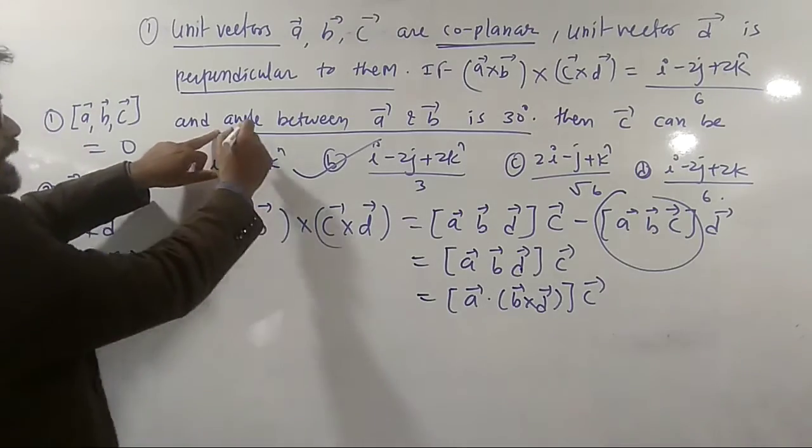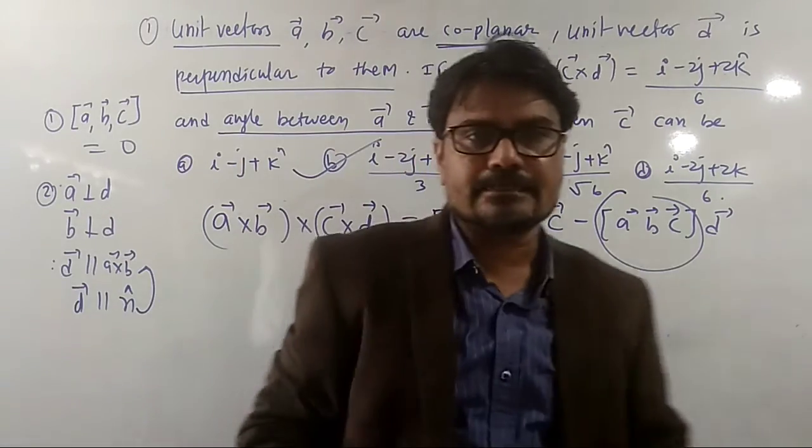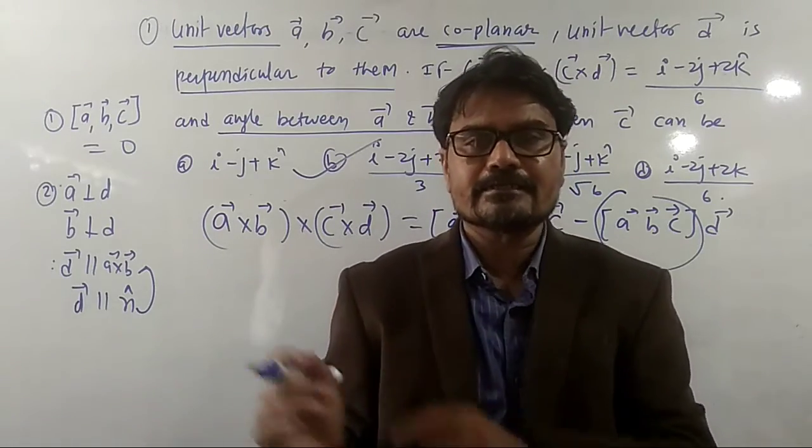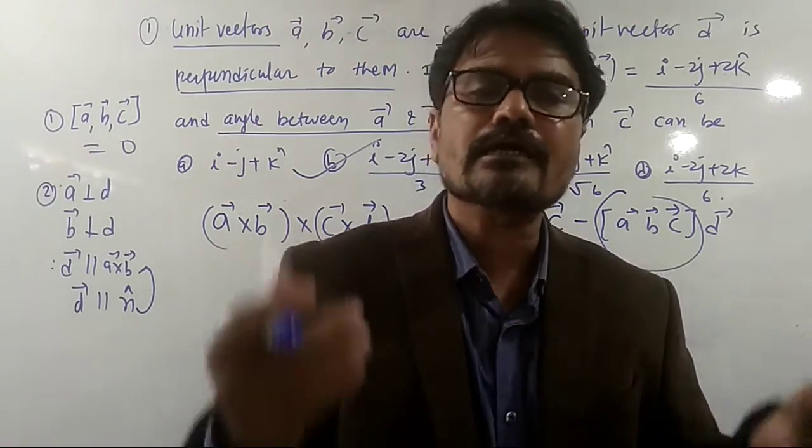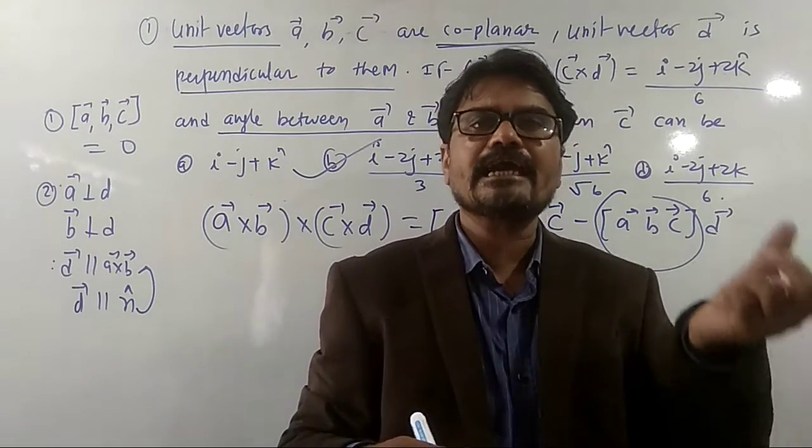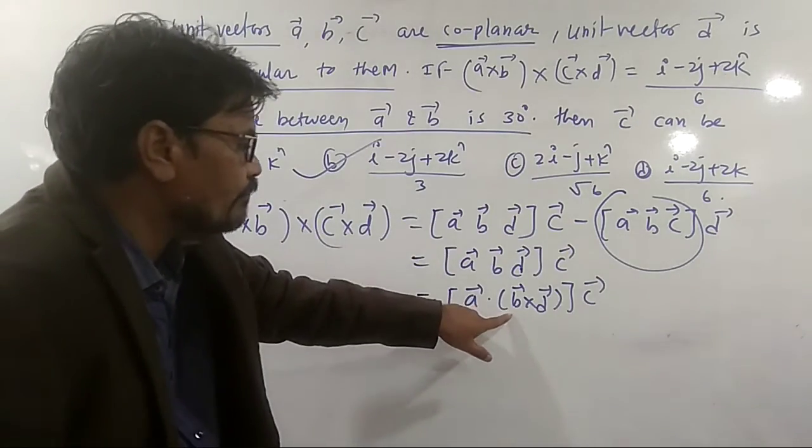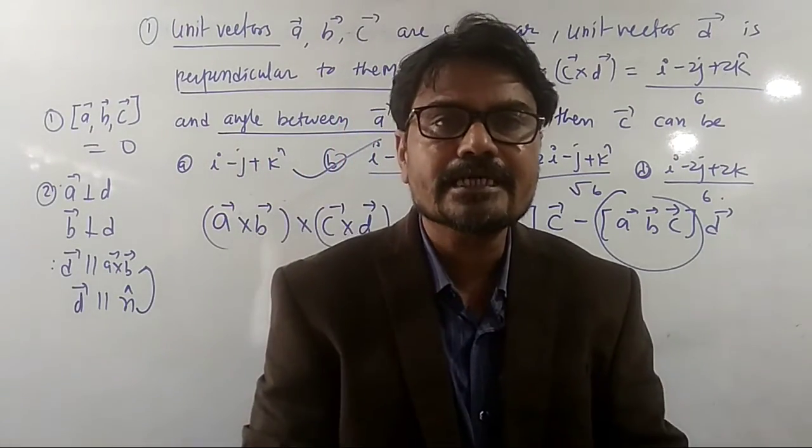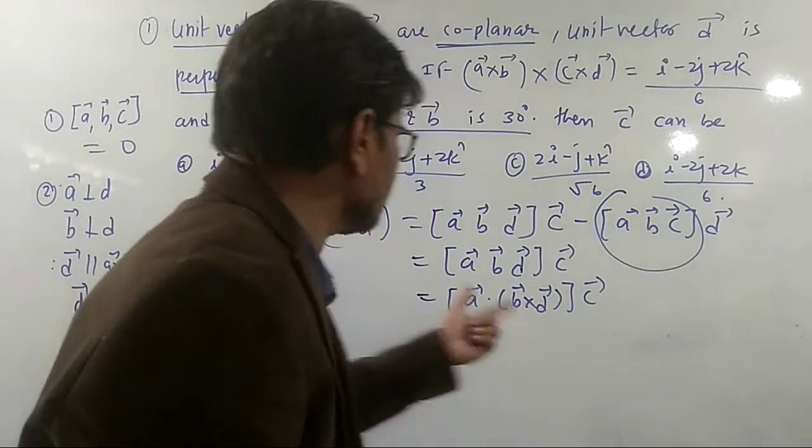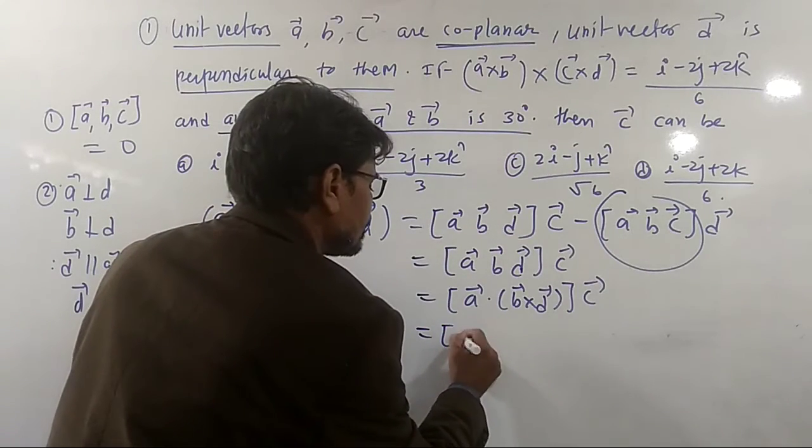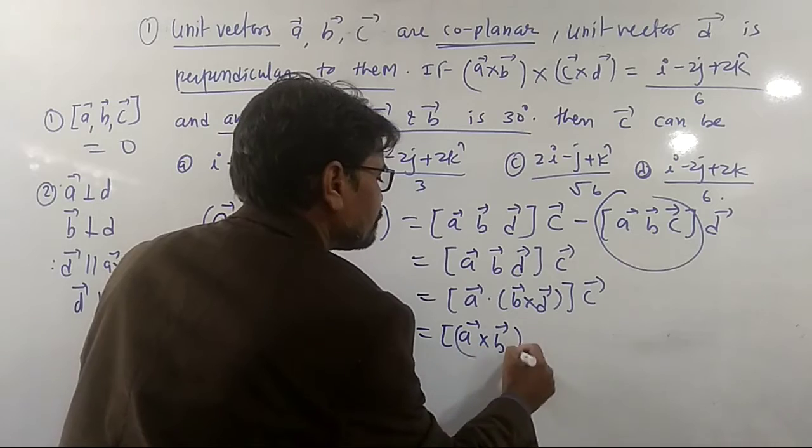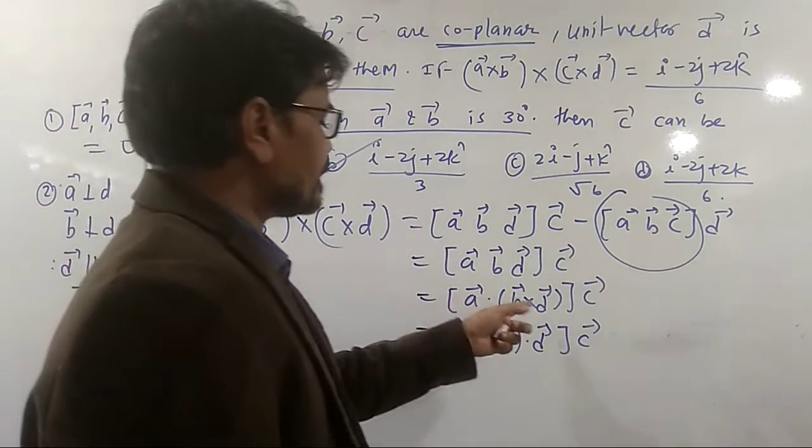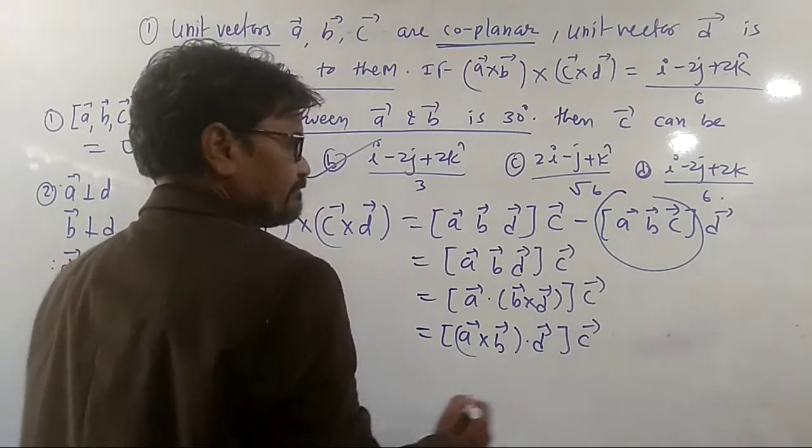It is also given that the angle between A and B is 30. A and B are unit vectors and the angle between them is 30 degrees. So it is better to have the dot product or the cross product of A and B. As we are having A and B here, by the definition of the scalar triple product, we can interchange the dot and cross. So this can be written as A cross B dot D into vector C.